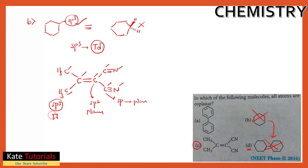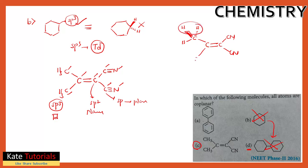However, the CH3 groups on both sides of option C are sp3 hybridized, which means tetrahedral geometry. One hydrogen will be above the plane and the other below. So the CH3 groups are not in the same plane, making option C not fully coplanar.